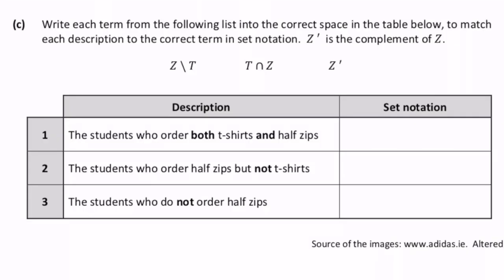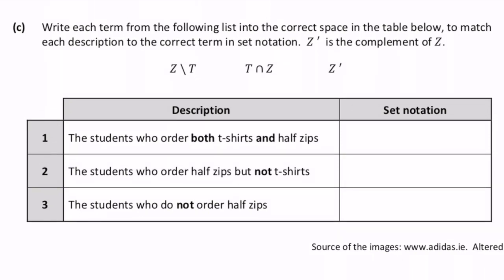Write each term from the following list in the correct space in the table below to match each description to the correct term in set notation. Well students who order both t-shirts and half-zips, if you order both, that's the intersection. So that will be this answer here. This is the intersection. This will be T intersection Z.